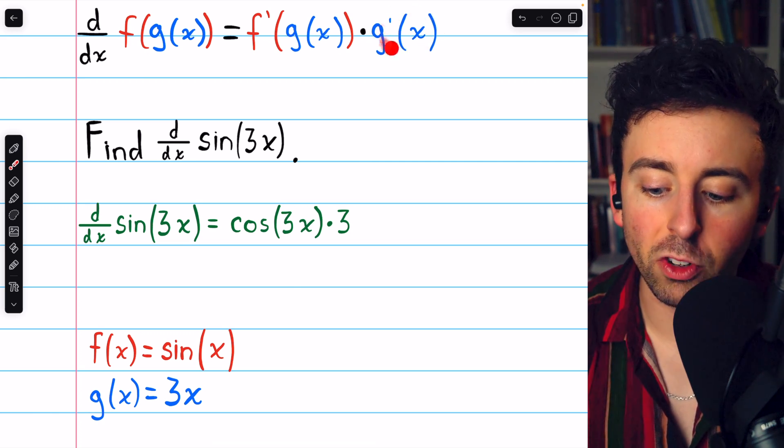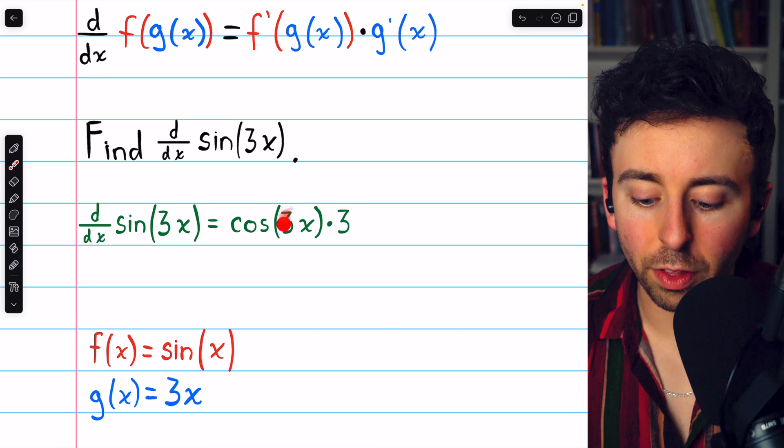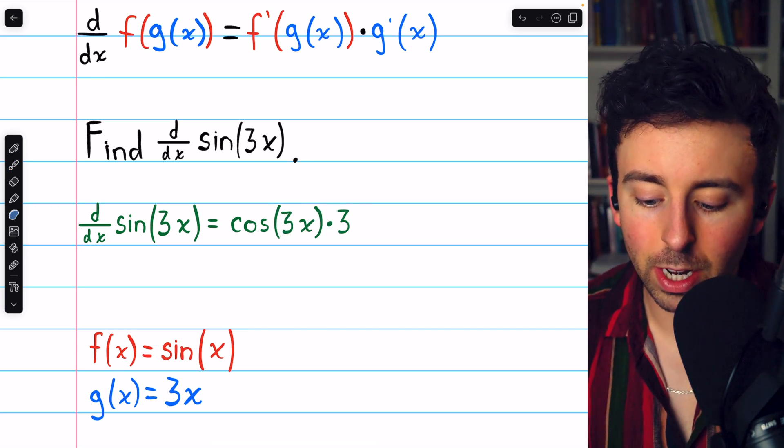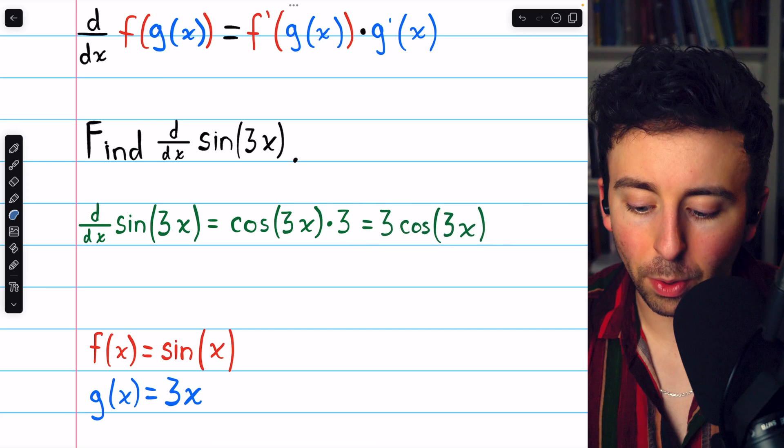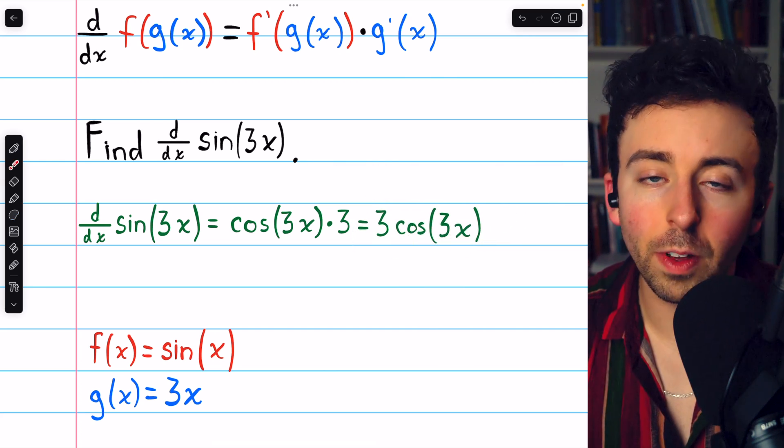Then multiply by g prime, the derivative of that inside function. The derivative of 3x is 3, so we multiply by 3. And then just rewrite it in a way most people prefer with the coefficient first, 3 cosine of 3x.